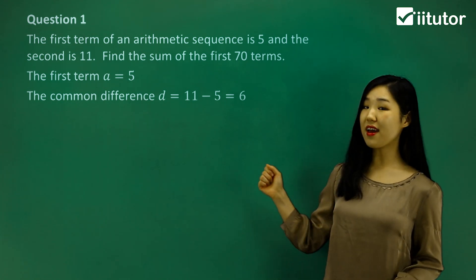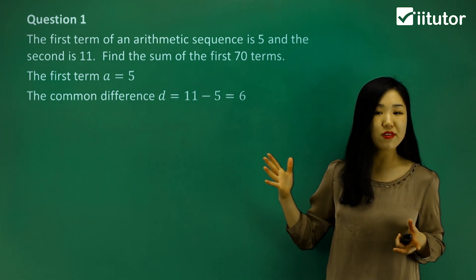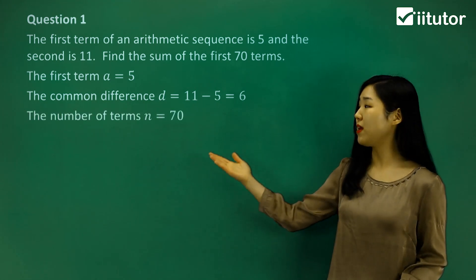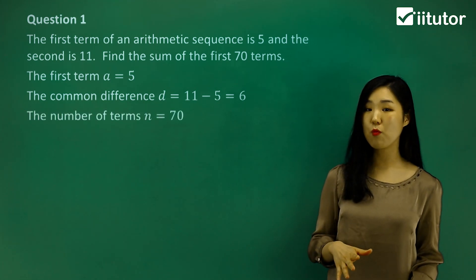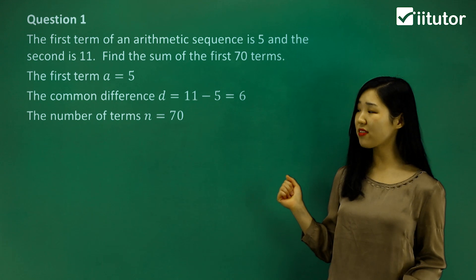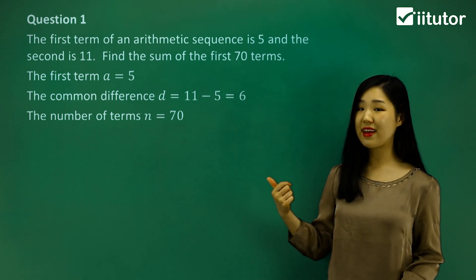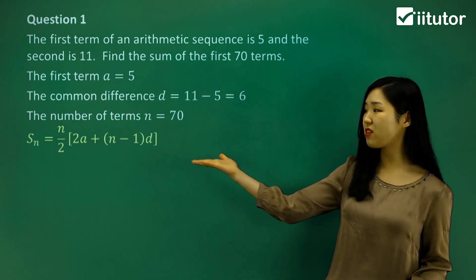And what is going to be n? 70 terms. We want to find the sum of 70 terms, so n will be 70. That's the number of terms we want to add up. So this one, because we know a and d and n, we'll have to use this formula here.